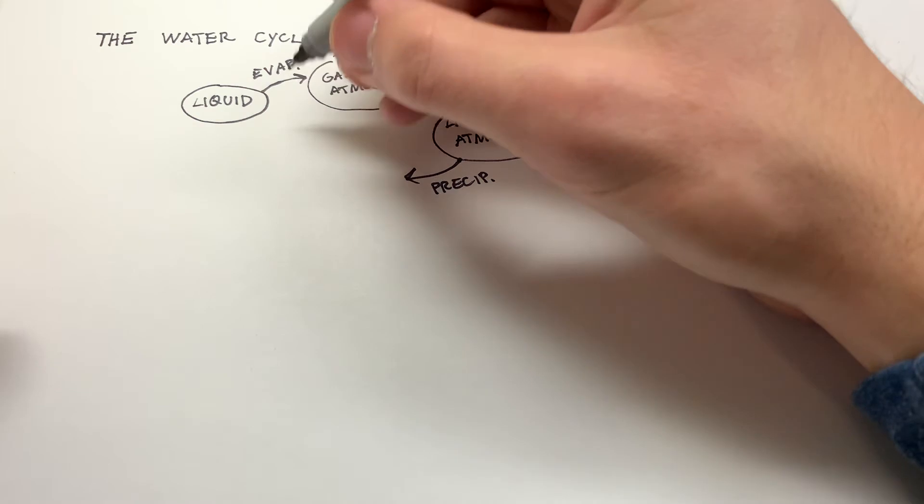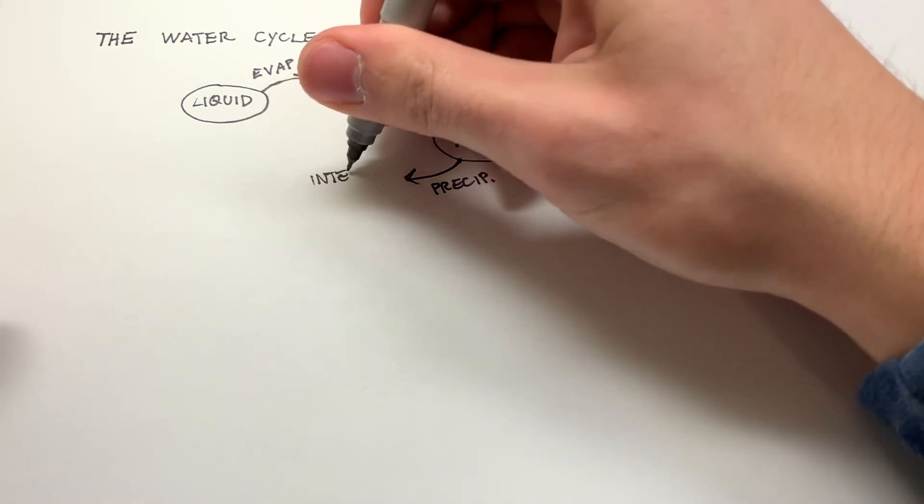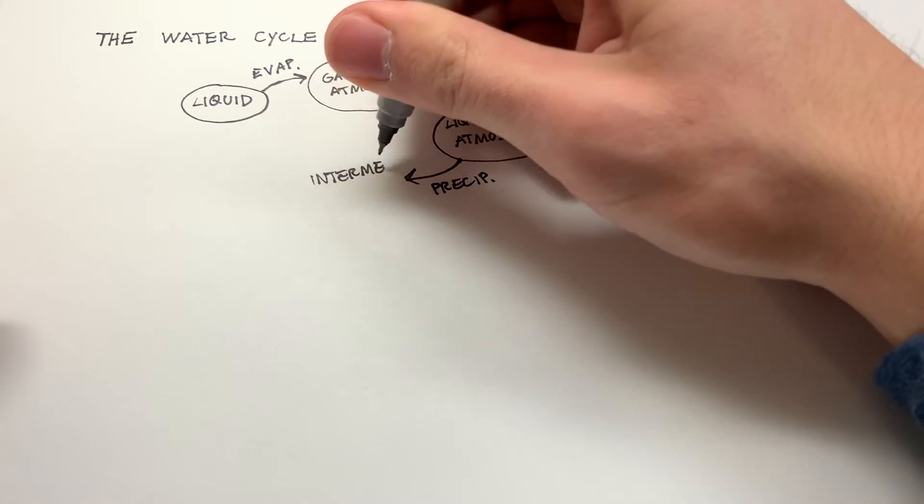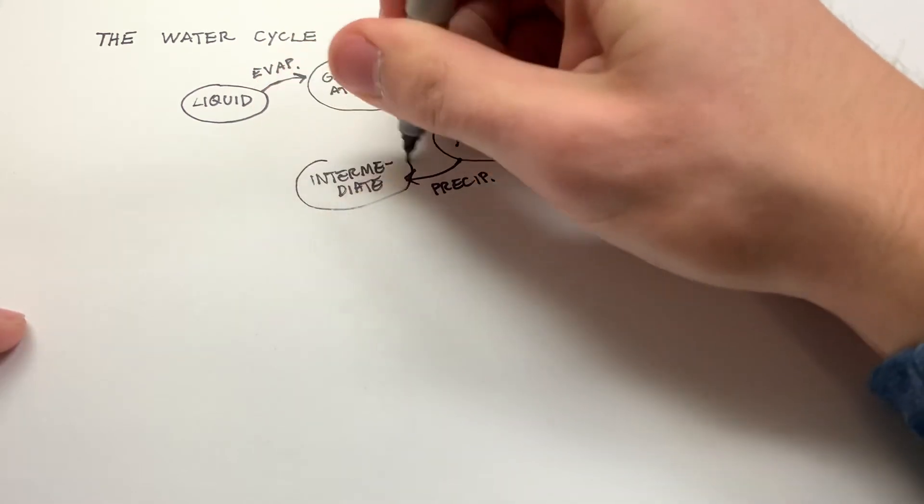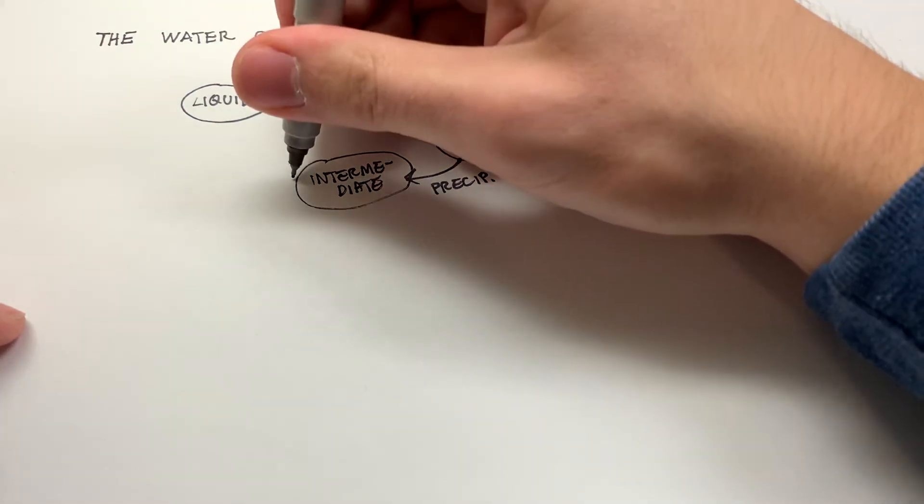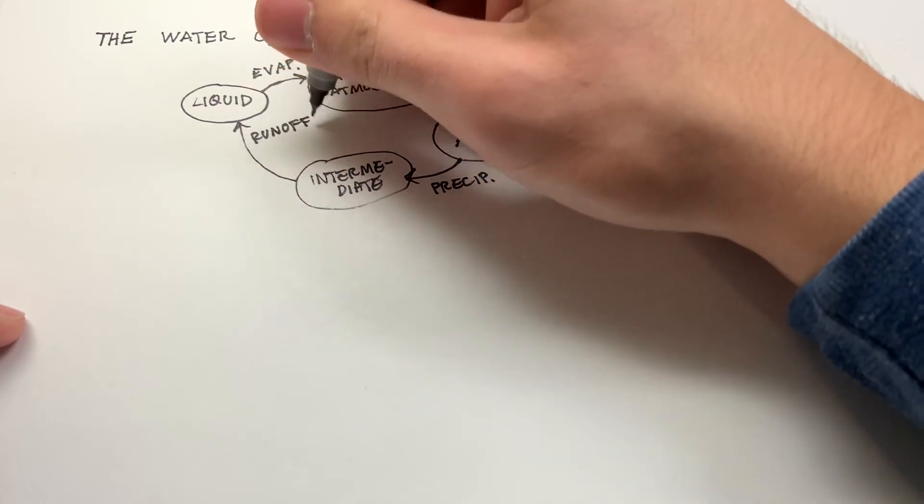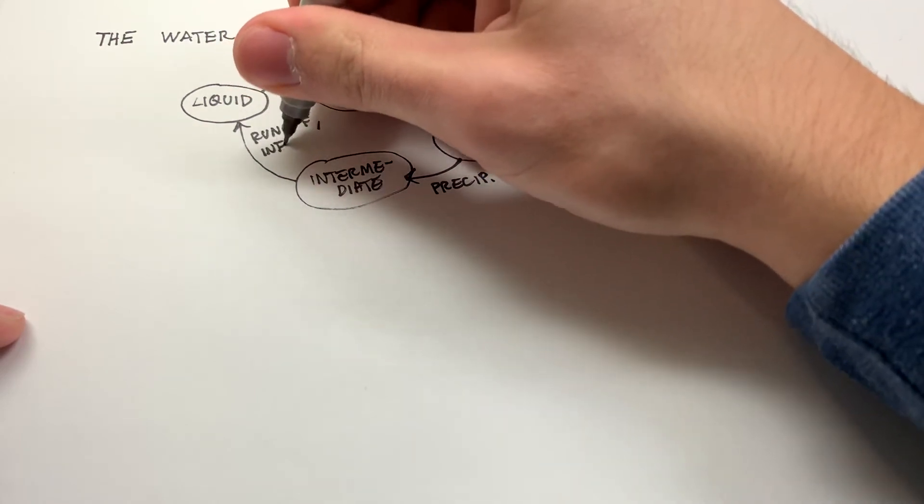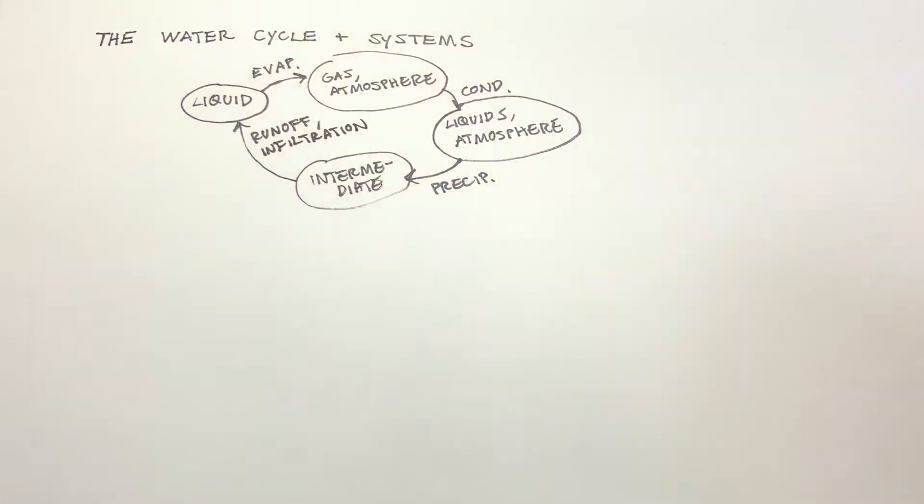So this is where we have things like another process. We'll call this intermediate. Before it returns to a main body of water, we might have some intermediate state in the ground on a surface. And then through processes such as runoff, infiltration, groundwater infiltration, and then moving through the ground, it will eventually return to some body of water. So that's the basic water cycle. Nothing mind-blowing there.